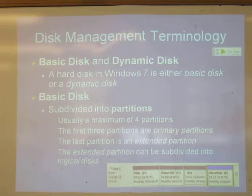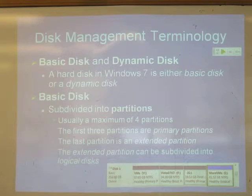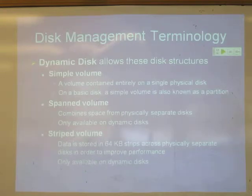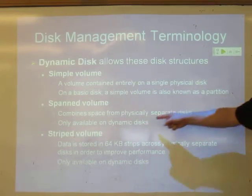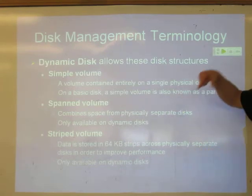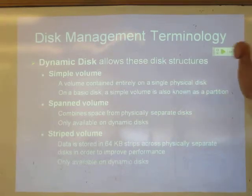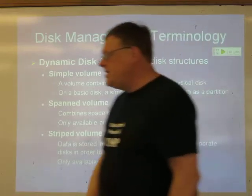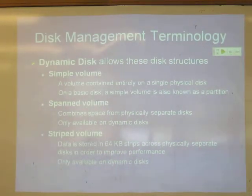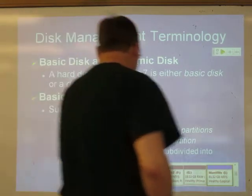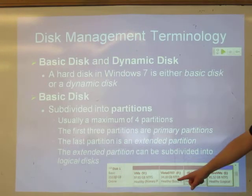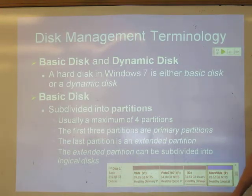Windows 7 no longer supports all five dynamic disk types, but only three. A simple volume is just a bunch of contiguous blocks on one drive — the same as a partition. You can have a spanned volume, which combines space from non-contiguous blocks of a disk or from separate physical disks. This is probably the main reason anybody would use dynamic disks. For example, I have Vista installed on a 34 gig partition, and you'll find that Microsoft operating systems since Vista swell by about one gigabyte per month on average.